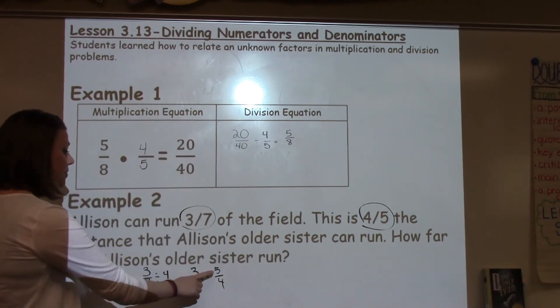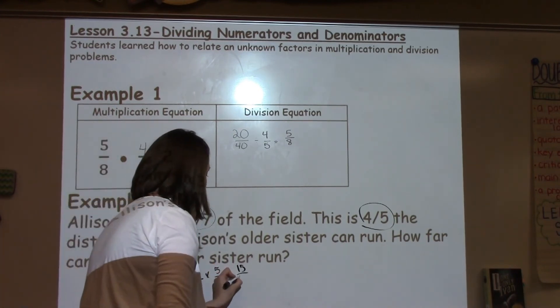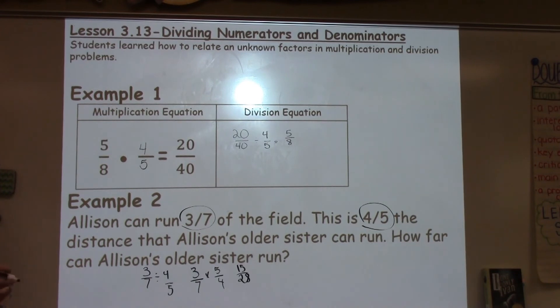I have 3 times 5, which is 15. And 7 times 4, which is 28. So, Allison's sister can run 15/28 of the field.